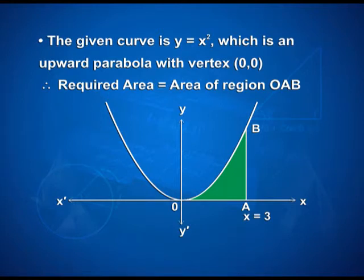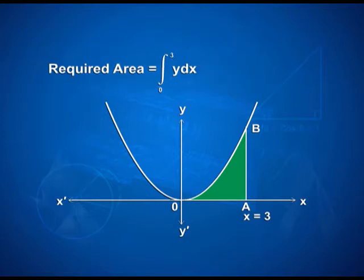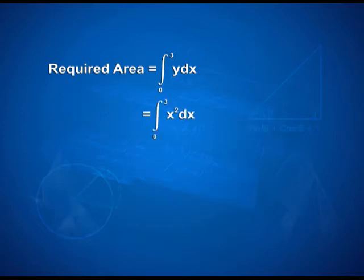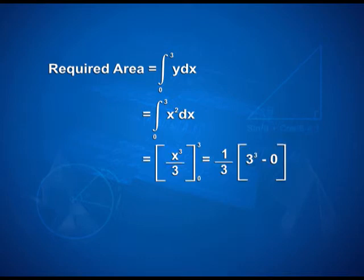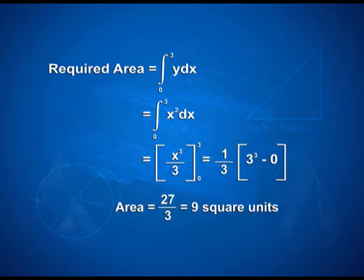Now look at the solution to the second question. The given curve is y is equal to x squared, which is an upward parabola with the vertex at the origin (0, 0). Therefore, the required area is equal to the integral from 0 to 3 of y dx, which equals the integral from 0 to 3 of x squared dx. On integrating, we have x cubed upon 3 with limits 0 and 3. On applying limits, we have (1/3) times (3 cubed minus 0), giving us 27/3 which equals 9 square units as the area.